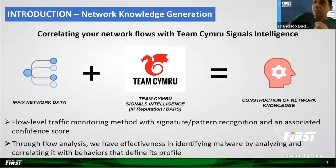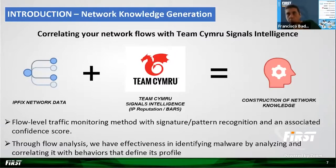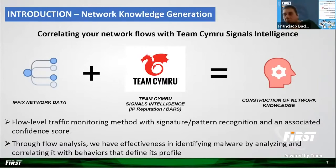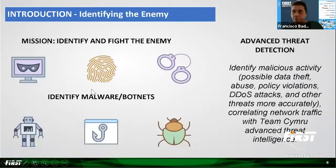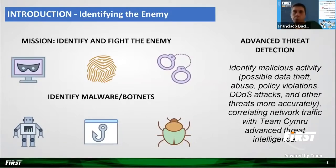For the success of our mission, we need to analyze our network traffic and generate knowledge. With a popular solution correlating your network flow with Team Cymru's signal intelligence through flow analysis, we have the effectiveness to identify malware by analyzing and correlating behaviors that define its profile. Our mission is to identify the enemy — identify malicious activity in our internet backbone — and correlate network traffic with this purposeful solution.